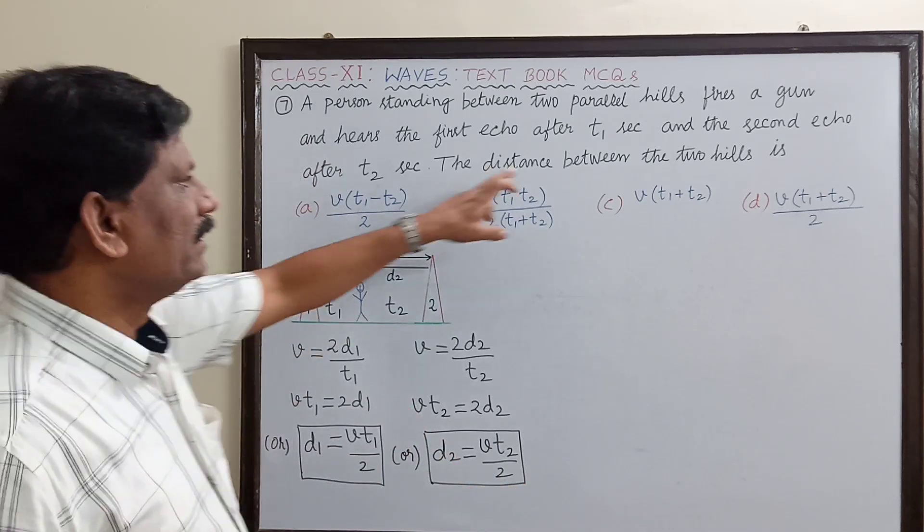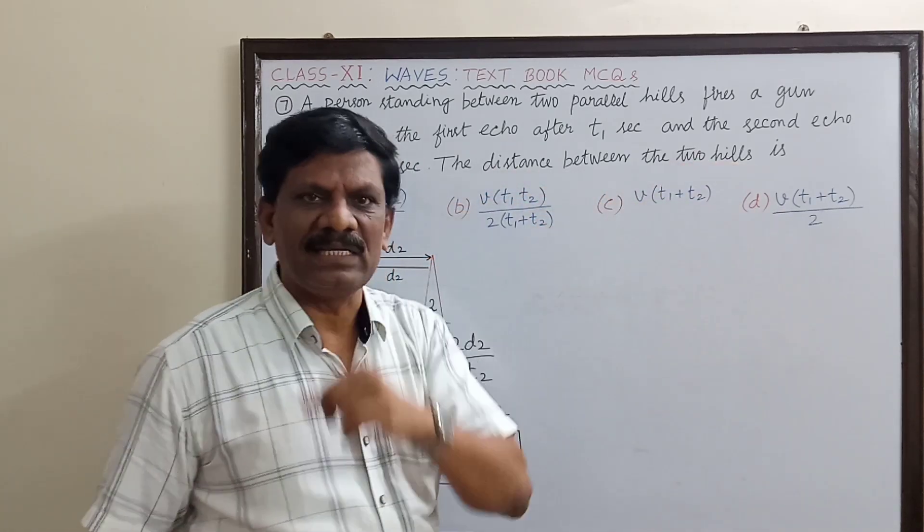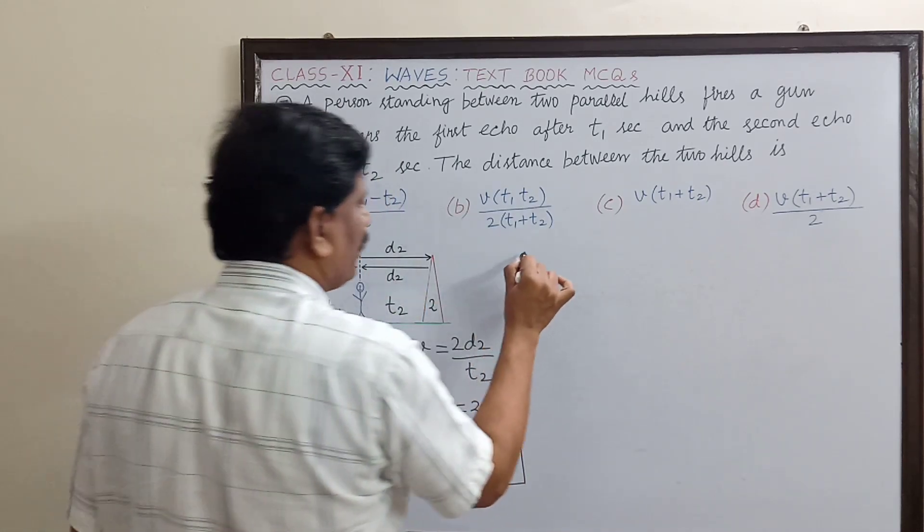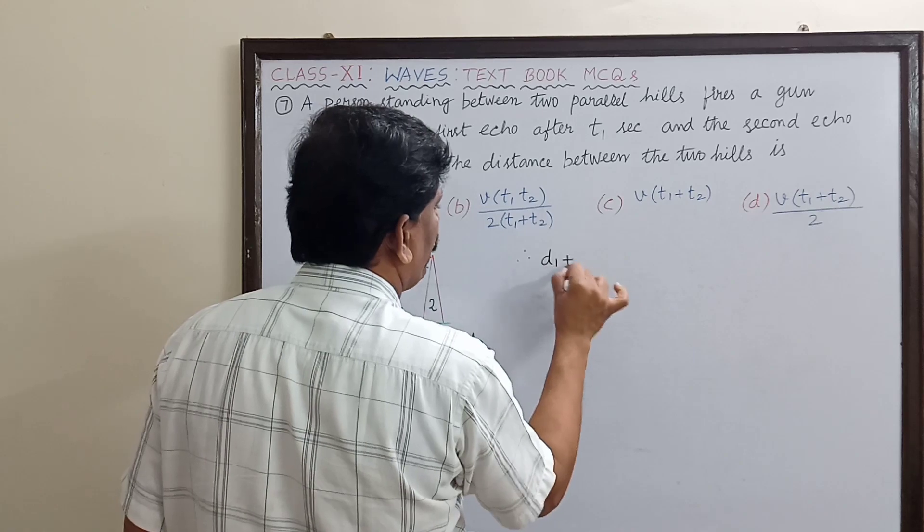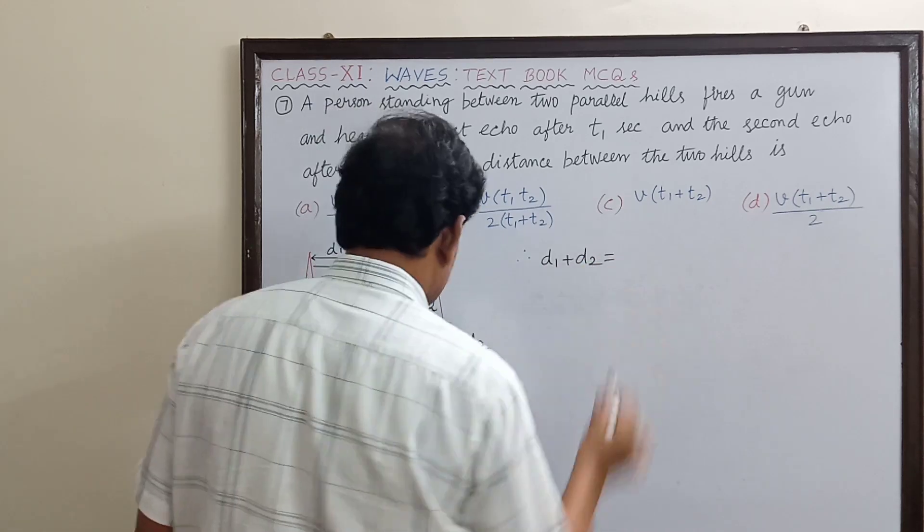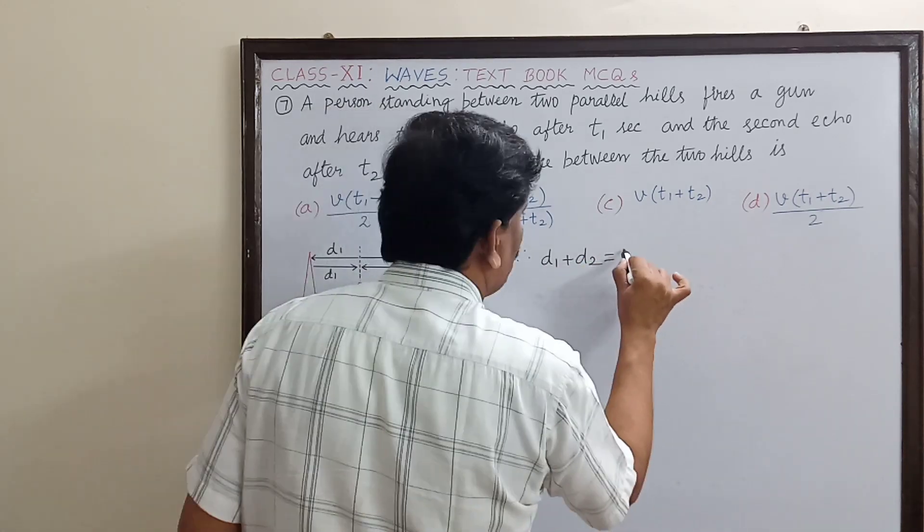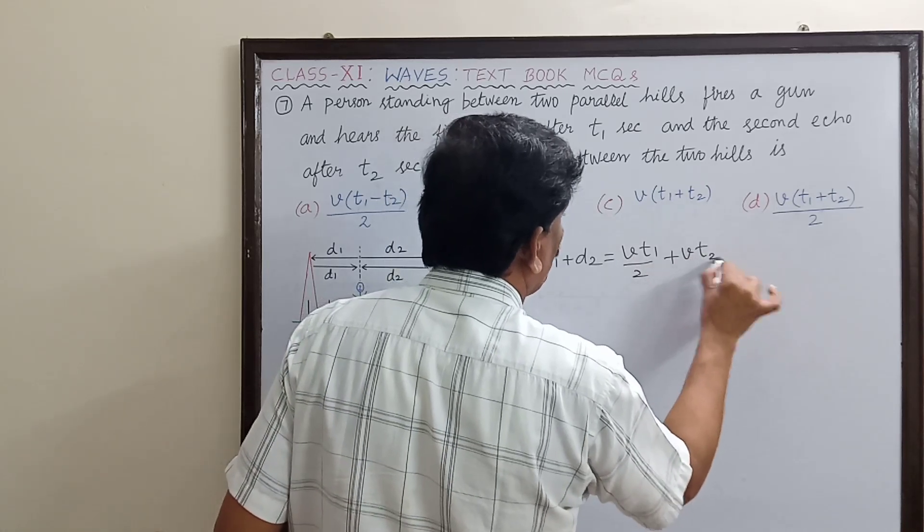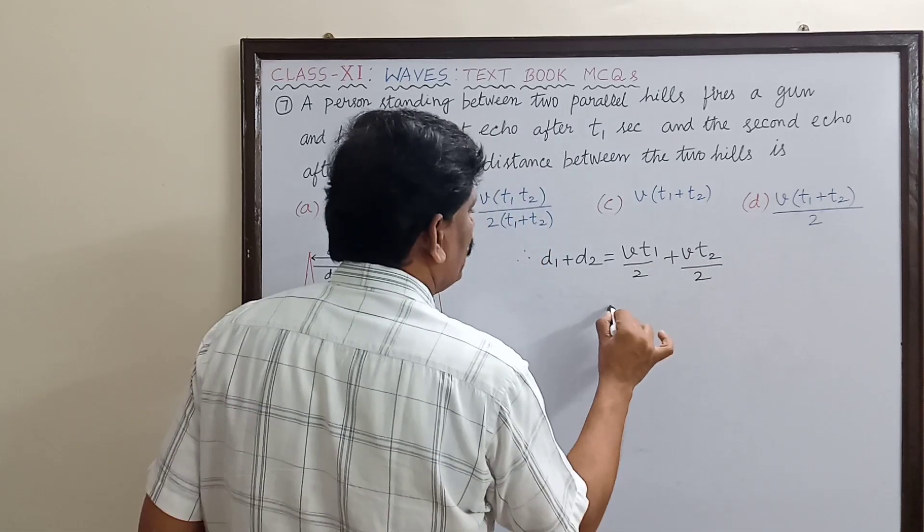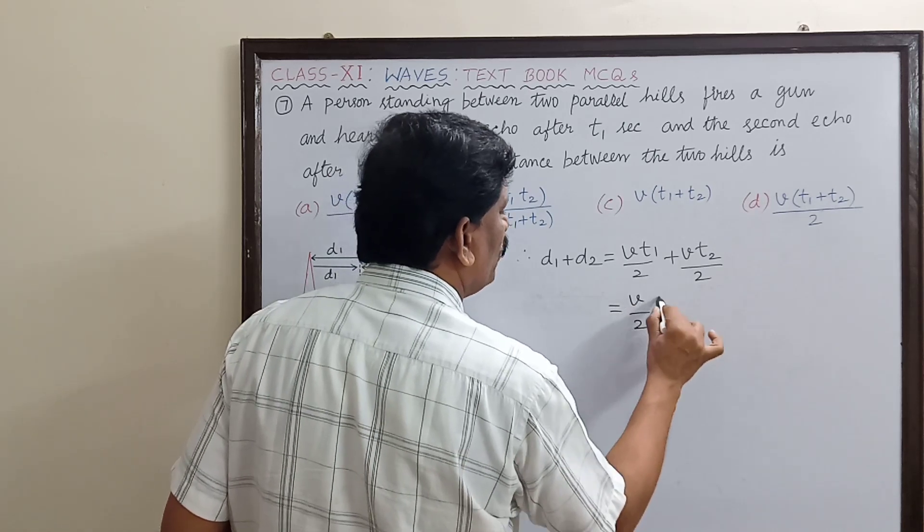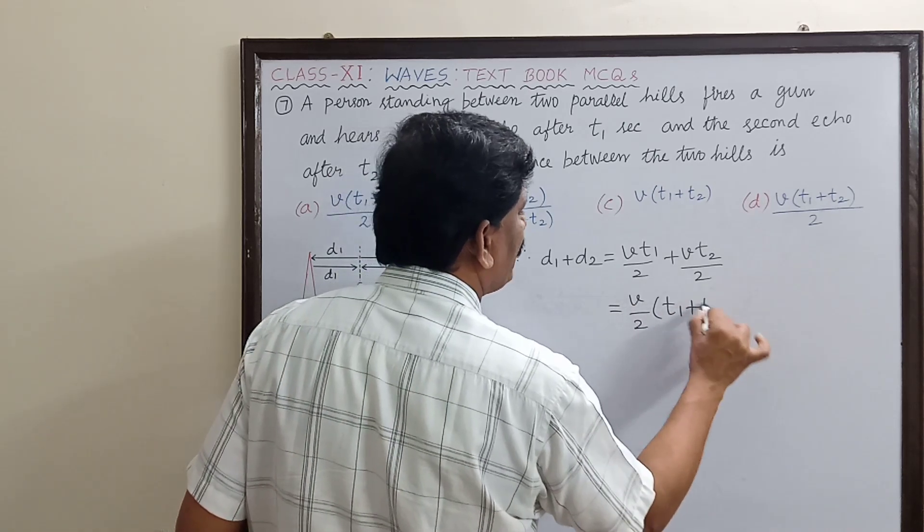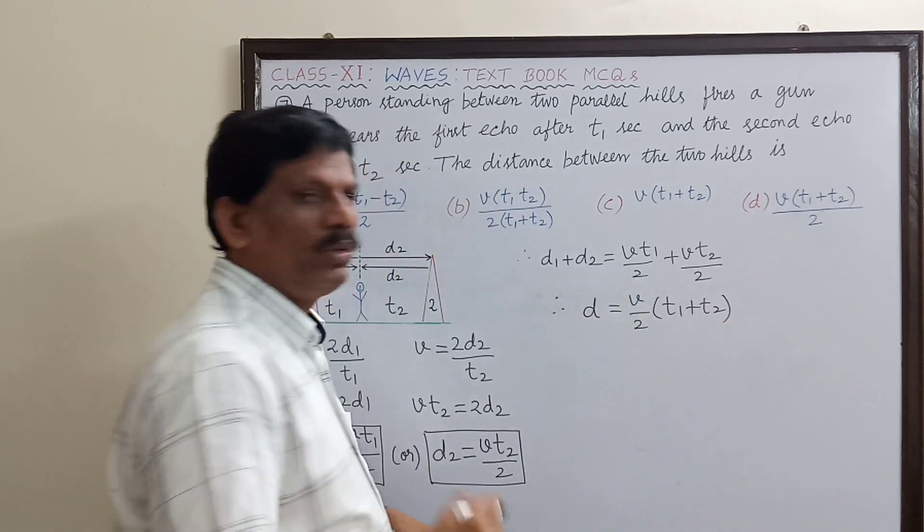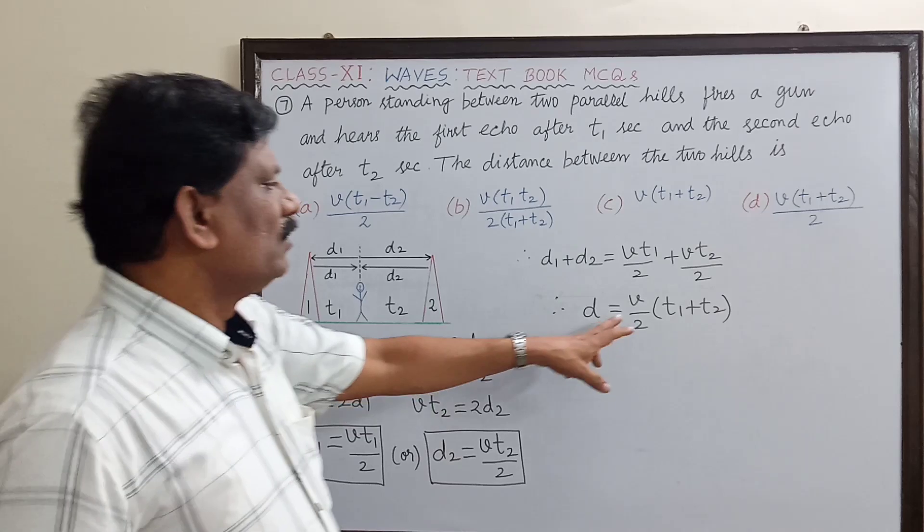Now what is asked here? The distance between the two hills. That must be equal to d1 plus d2. Therefore, d1 plus d2 is equal to vt1 by 2 plus vt2 divided by 2. So this is equal to v by 2 times (t1 plus t2).